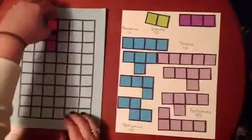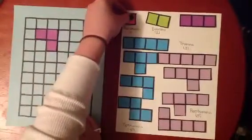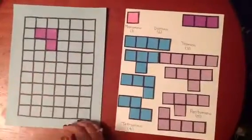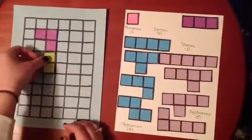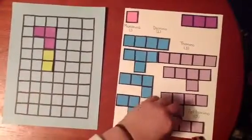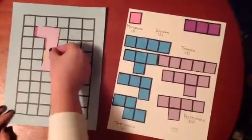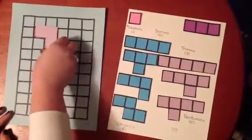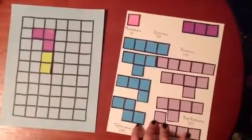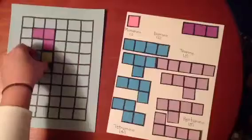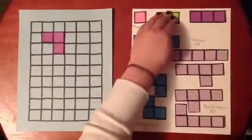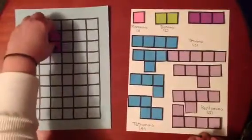Another example you could do is putting a tromino and a domino together to make a pentomino. Each time you could show how, if you reflect it or slide it, it is still the same polynomial, and then you could find the perimeter and area.